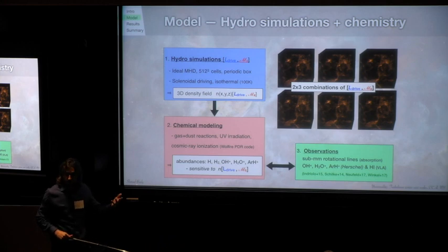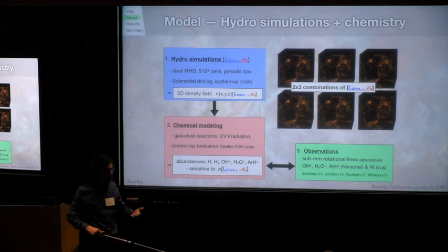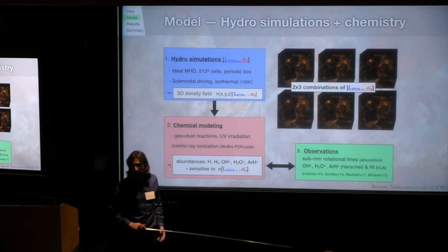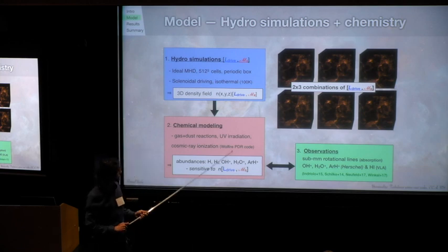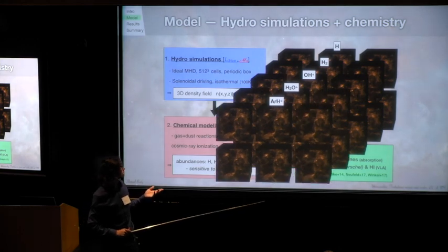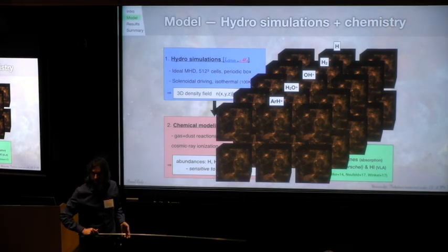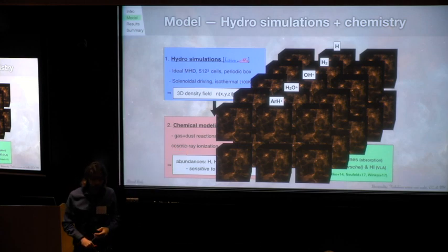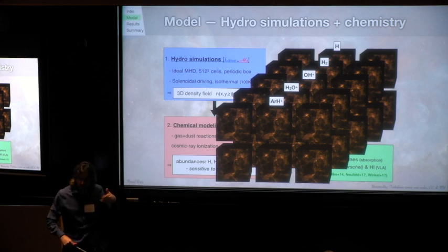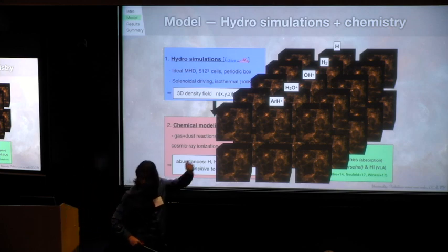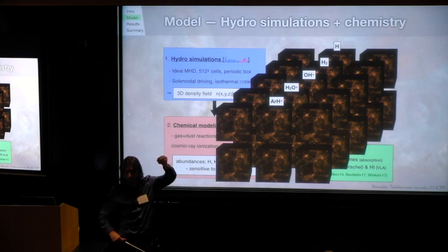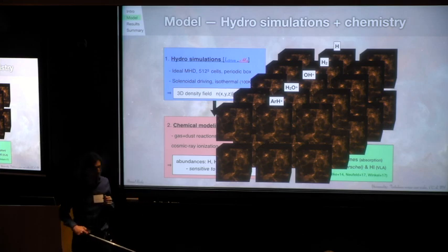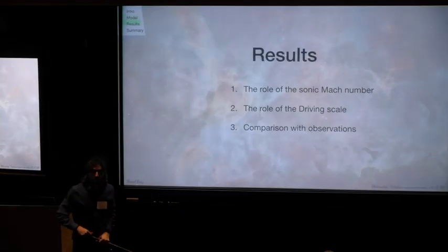Importantly, we have to run several simulations, because we want to constrain the turbulent parameters. So we run six simulation boxes for different combinations of driving scale, L drive, and Mach numbers. So we have six boxes like this. I actually have more boxes, because for the different molecules and atoms, for each of them, we calculate a box like this, a map of the abundance integrated along line of sight. We always have to integrate along one axis, because that's what we see in observations. We never see the volume density of species. We always see integrated column densities.